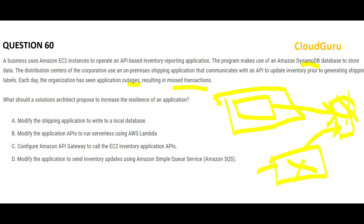Think of it like a doctor diagnosing a patient: if your system goes down due to outages and you are losing transactions, plug in a middleware system — something like SQS. Option D is the right answer because it is the only option that uses a messaging or middleware application. If I store my data in SQS, even if the database goes down my data is not lost.